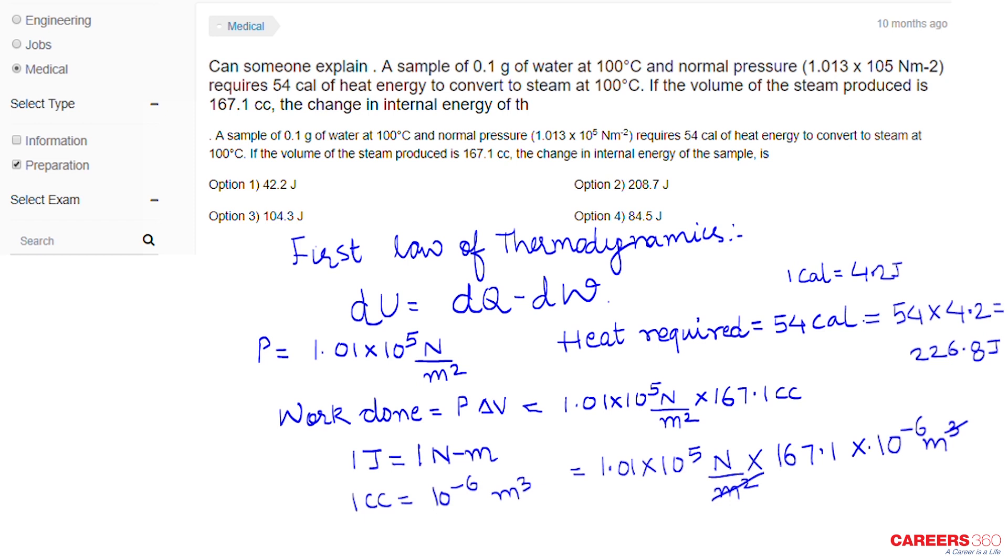If we multiply these units, we get 169.2 × 10^-1 newton-meters. Since 1 newton-meter equals 1 joule, this becomes 169.2 joules.